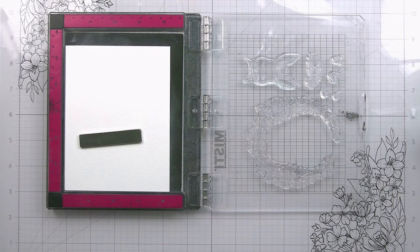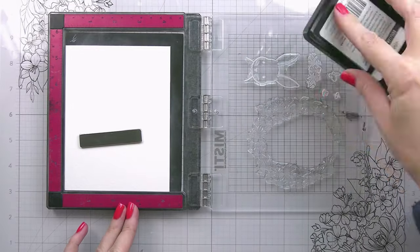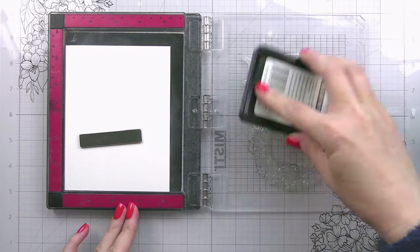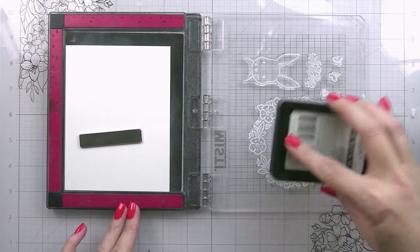So I'm treating with my anti-static tool, super important when we're embossing. And then I'm going to stamp these all out in the Brilliant White Pigment Ink from Honeybee. And then we're going to use a white detail powder.